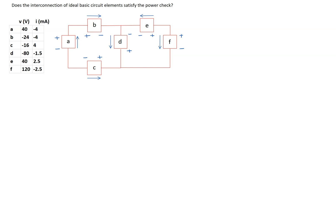Let's first have a look at element A. We know that in general, the power is given by the product of the voltage and the current. Since we are doing this for element A, I have used subscript A in this expression. Now the main point is, do we have a plus sign or a minus sign here? To determine that, we apply the passive sign convention. Looking at element A, the reference current is entering the element at the terminal marked negative. So this means we have to use the formula with a minus sign.